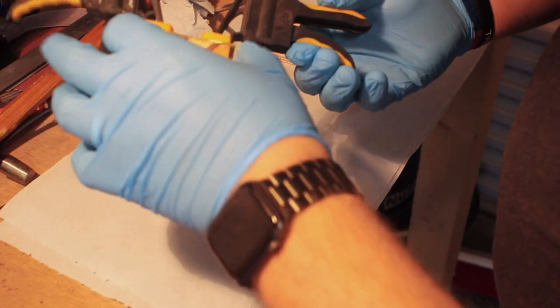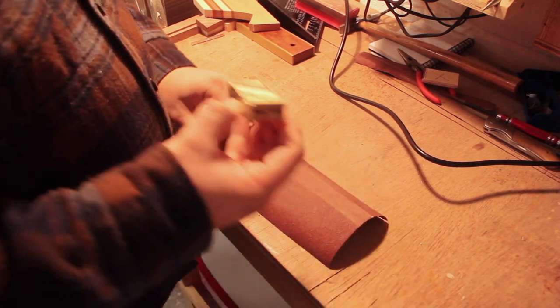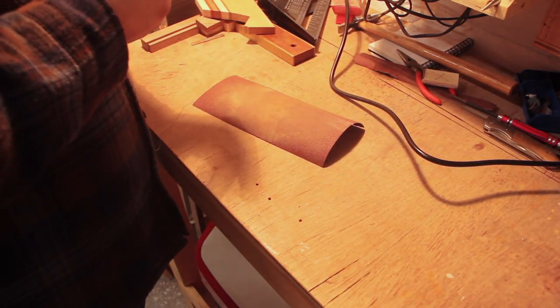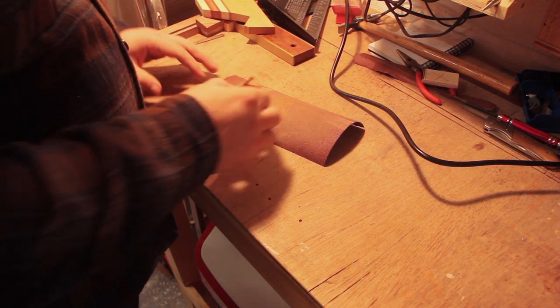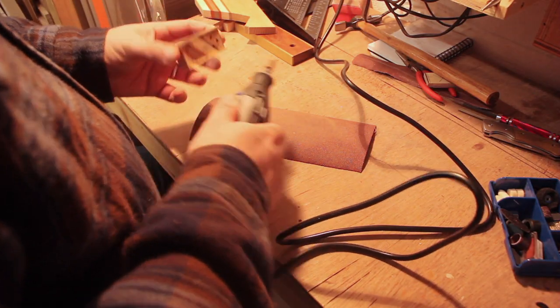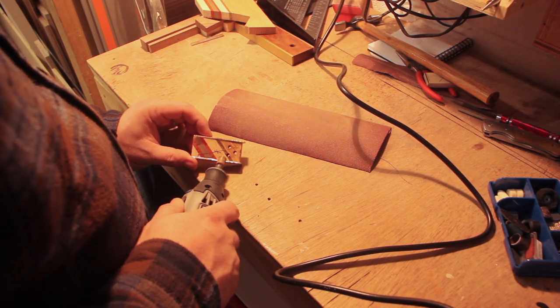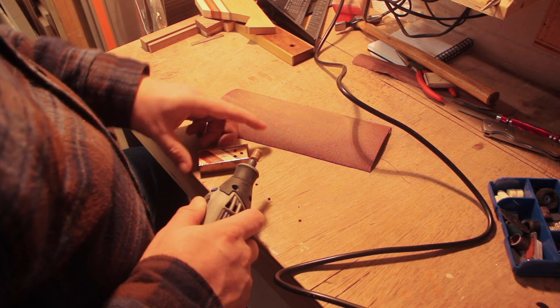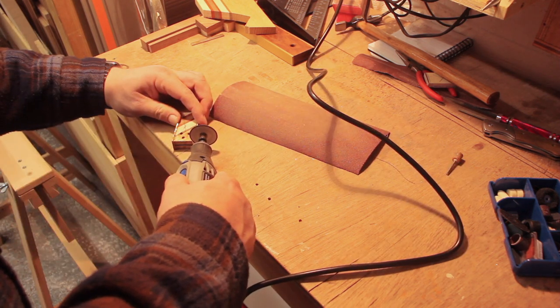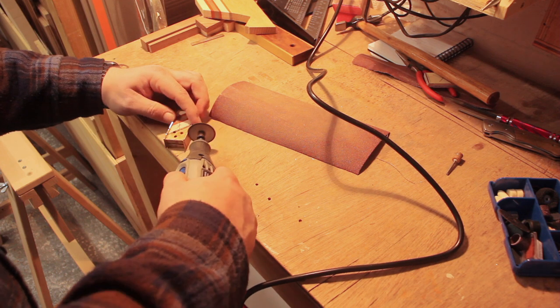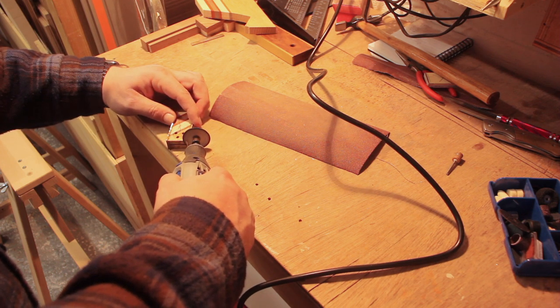So I started off by trying to hand sand the brass down and yeah that was a mistake. So I ended up cutting them off which worked a lot better. I first tried to sand it off with the Dremel tool but that didn't work in the end, so yeah I cut it off easy - just cut that excess off with the cutting tool for the Dremel and then a bit more hand sanding.